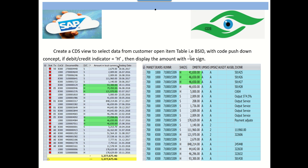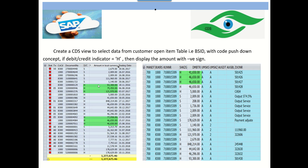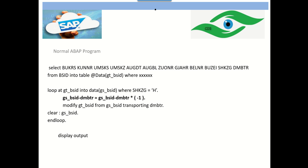When we try to select data from the BSID table, at the table level we can see all amounts are positive only — but with a debit/credit indicator. In normal ABAP programming, we first select all the required data from BSID into an internal table, then loop through the internal table: when the indicator is 'H', we multiply the amount by minus one and modify the internal table. This is the normal ABAP approach.